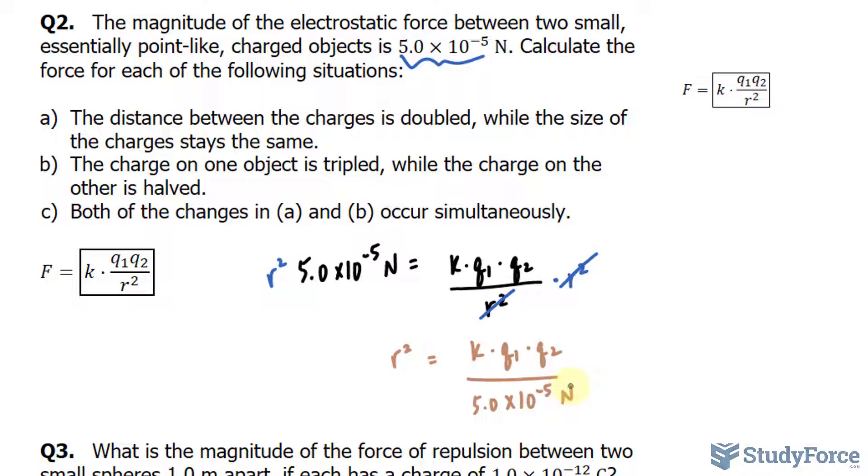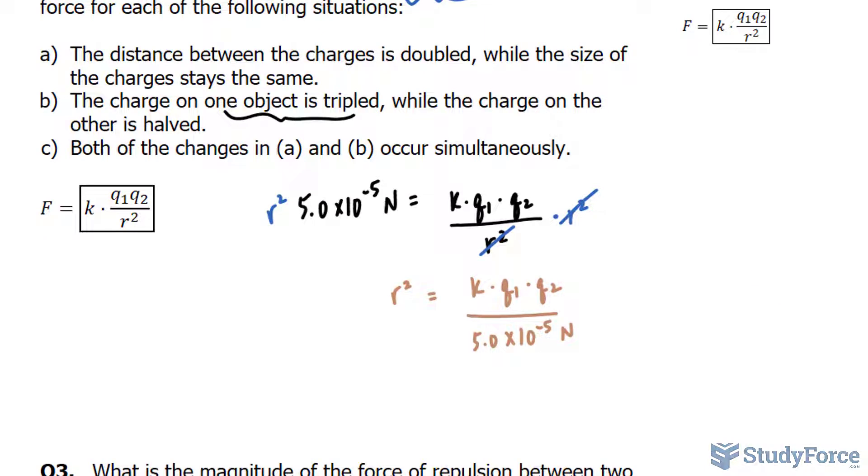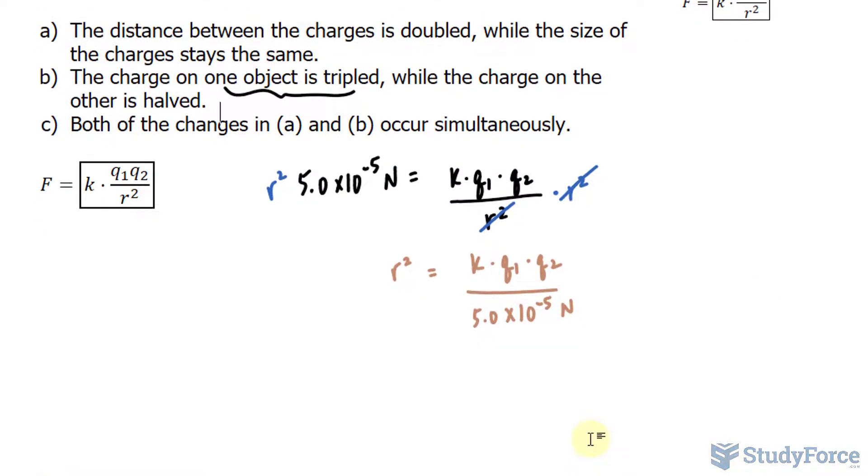I'm going to set up another equation using the Coulomb's Law. But instead of q sub 1 being simply q sub 1, I will rewrite it as 3 times q sub 1 since one of the objects is being tripled. And the other q value, I will write it down as 0.5 q sub 2. If that's confusing to you, let me show you what I mean. And I'll explain why I'm doing this after I create that equation.